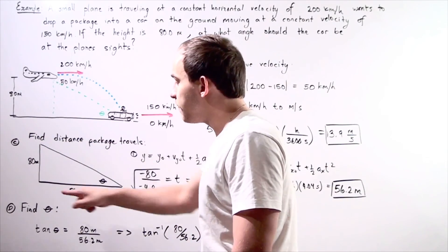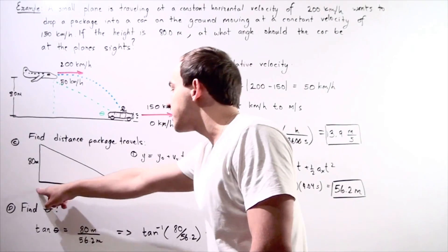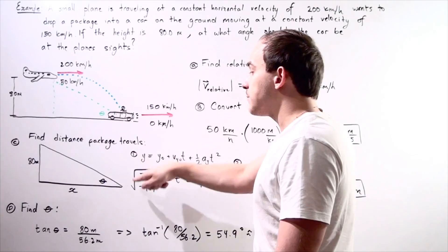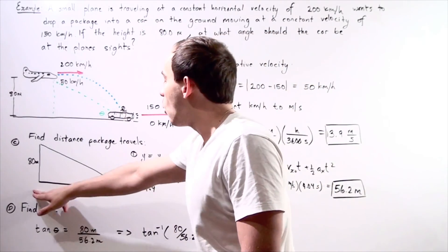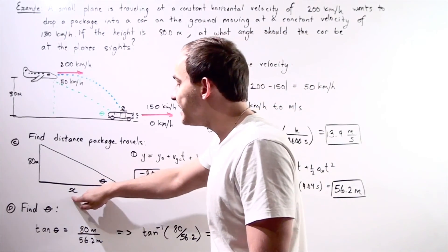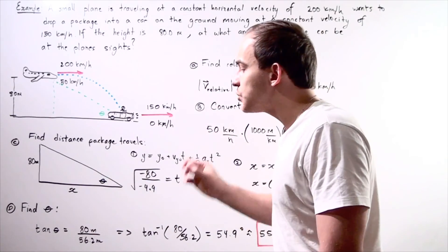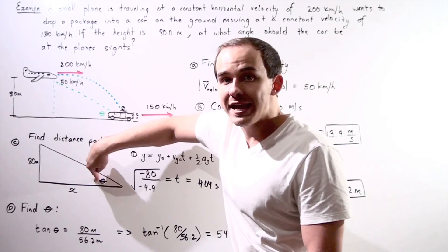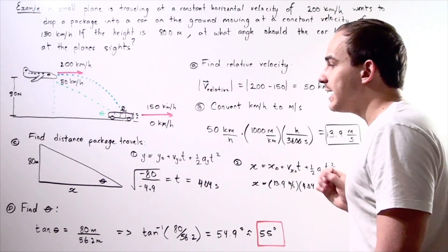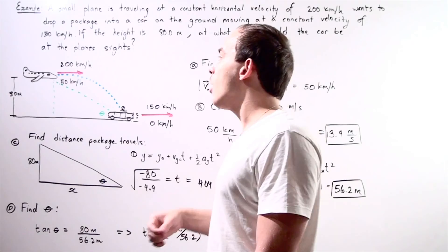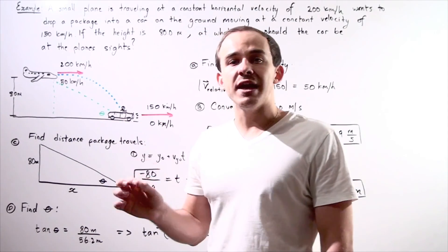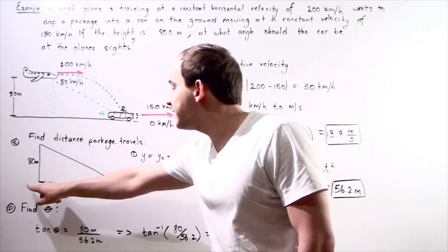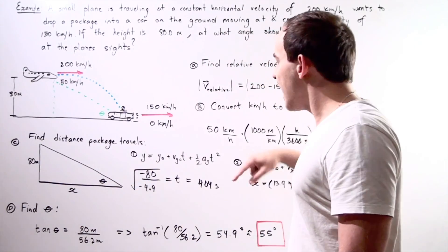We want to find what the distance, what the base is of our triangle. In other words, how far does the package travel along our x-axis? If we find the x, we can then use our trigonometric tangent function to find our theta, our angle. So let's begin by figuring out how much time our package spends in the air. If we find the time, we can find the distance our package travels.